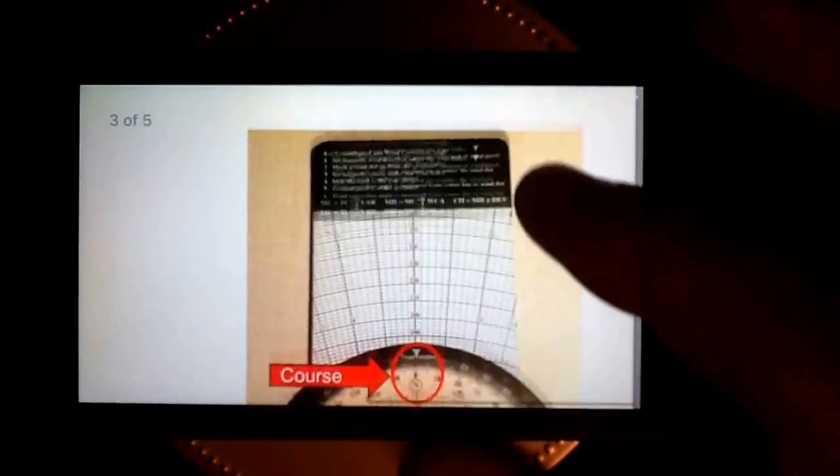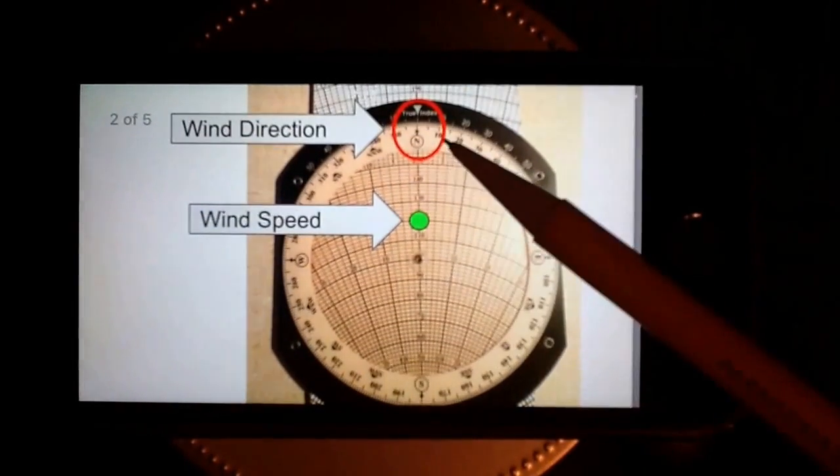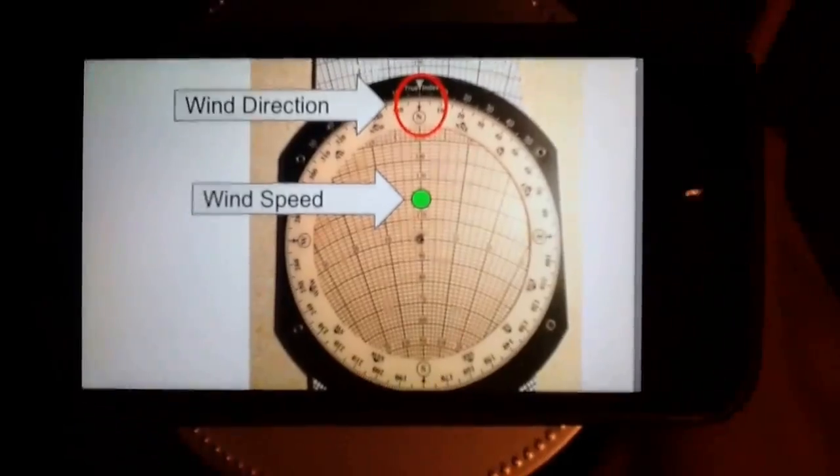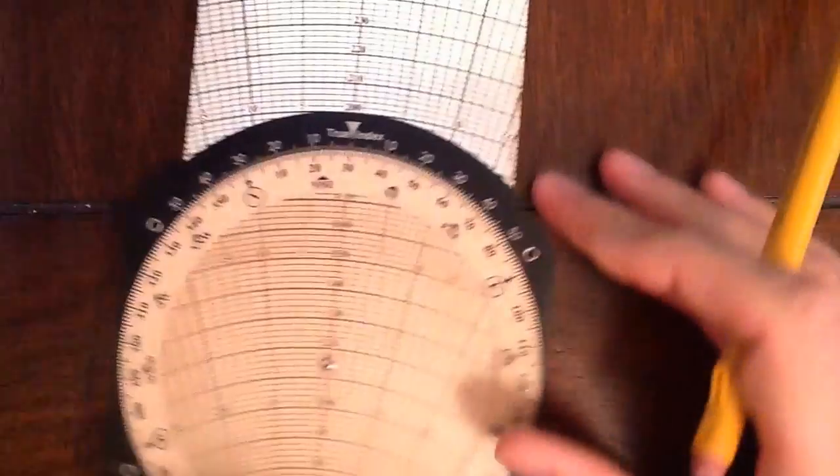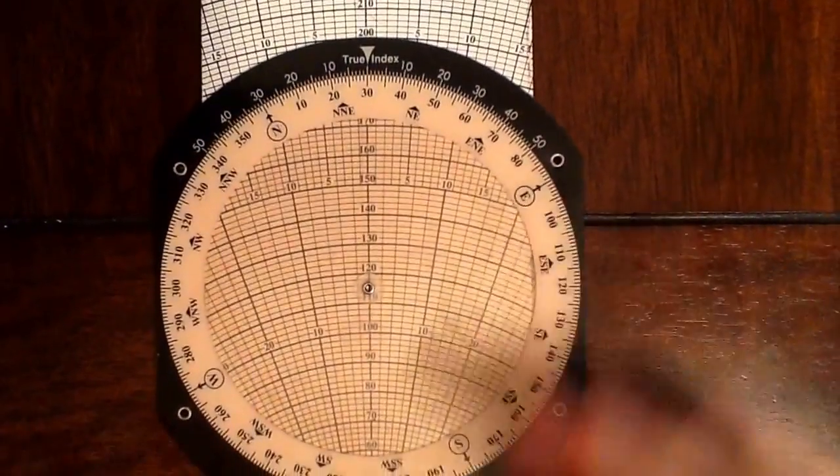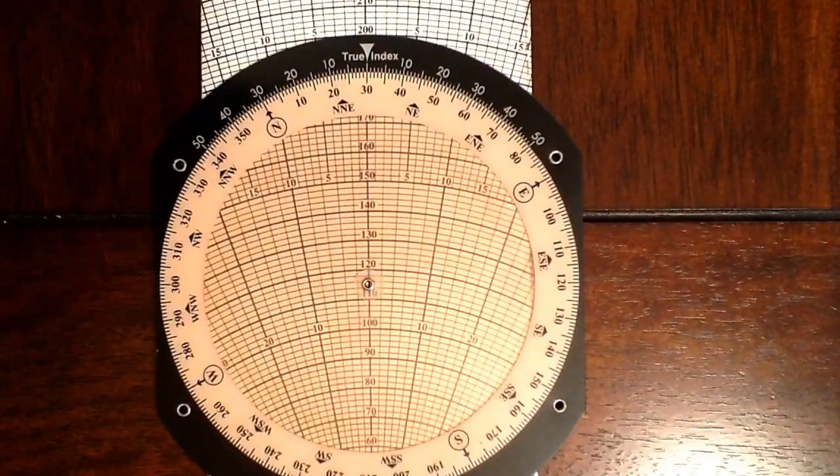So for starters, let's put our flight computer into wind mode by setting wind direction and speed. In this example, say the wind is out of the north at 360 degrees, and it's blowing 20 knots.